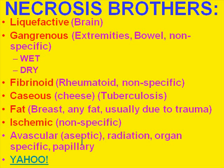Liquefactive necrosis is necrotic tissue that has turned into liquid, and almost exclusively this refers to brain necrosis. Gangrenous necrosis is a type of ischemic necrosis in which extremities, bowel, or organs are dead. In the early stages, where there's still a lot of fluid present due to the acute inflammatory hyperemic reaction, it may be called wet gangrene. As time goes on, the water may be absorbed — this is called dry gangrene.